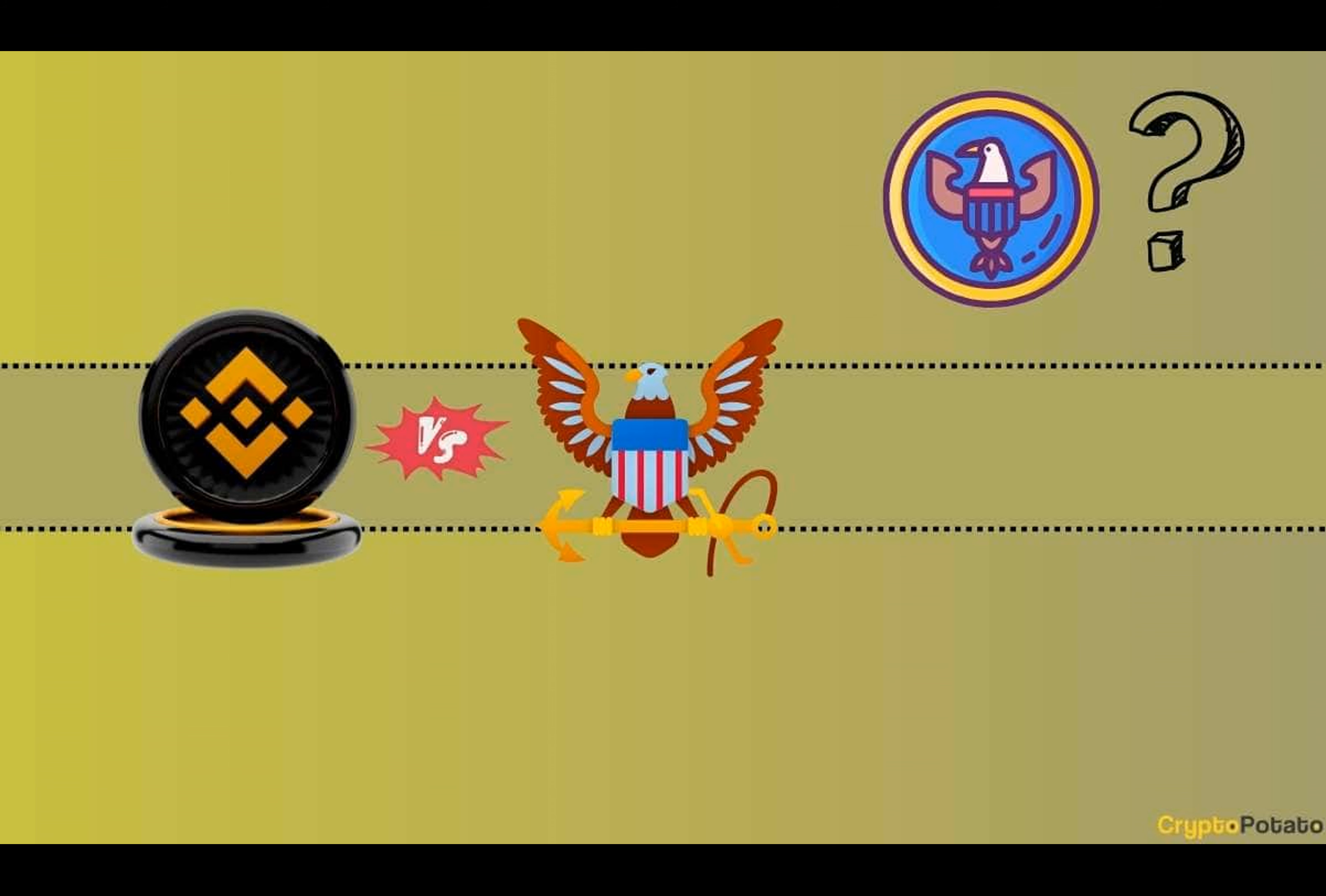Some of those include Solana, Cardano, Polygon, and many more. Interestingly, the agency this time excluded Ripple's coin XRP from the lengthy list.